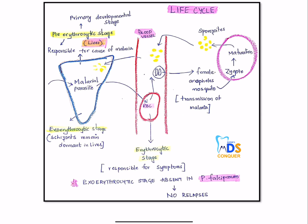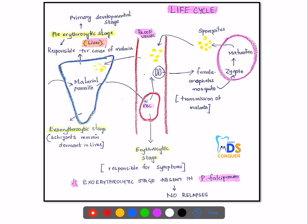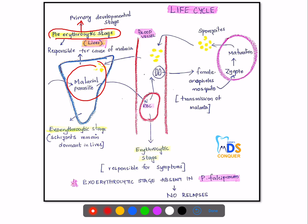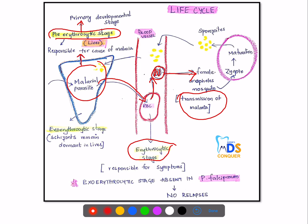This is a pictorial representation of the life cycle of the malarial parasite. The parasite first enters the liver where it has a pre-erythrocytic stage, which is the primary developmental stage responsible for causing malaria. From there it enters the RBC in the erythrocytic stage, then releases gametes carried by the female Anopheles mosquito, which is responsible for transmission. The gametes form a zygote, undergo maturation, and release sporozoites, which re-enter the bloodstream and then the liver.